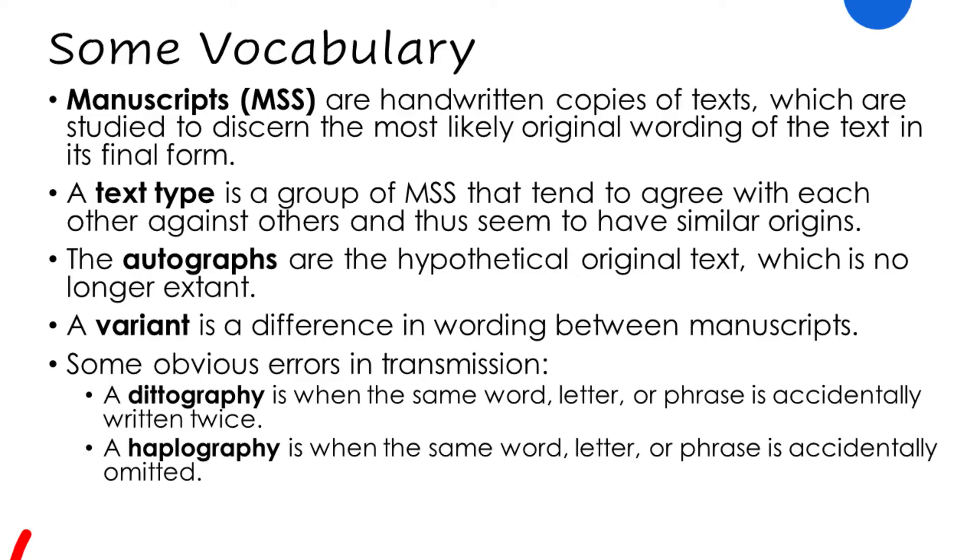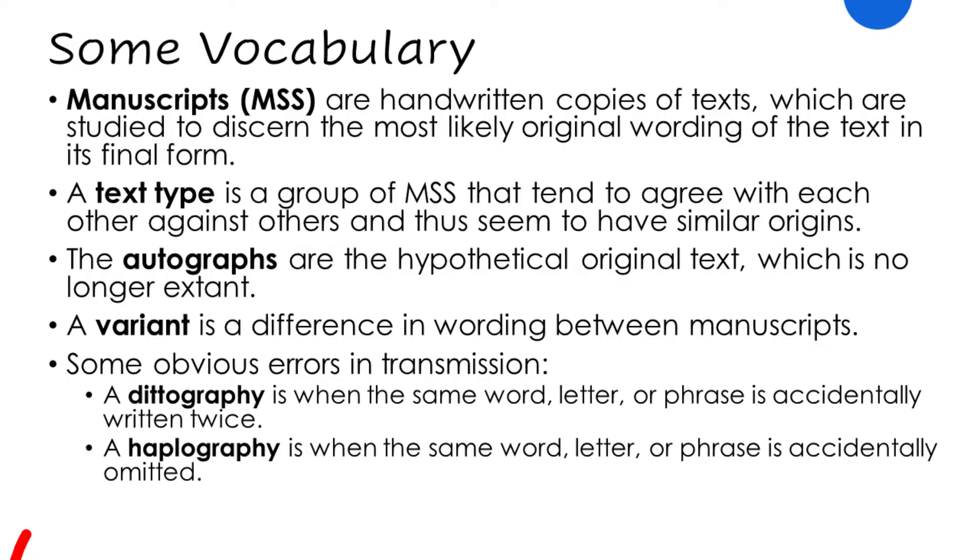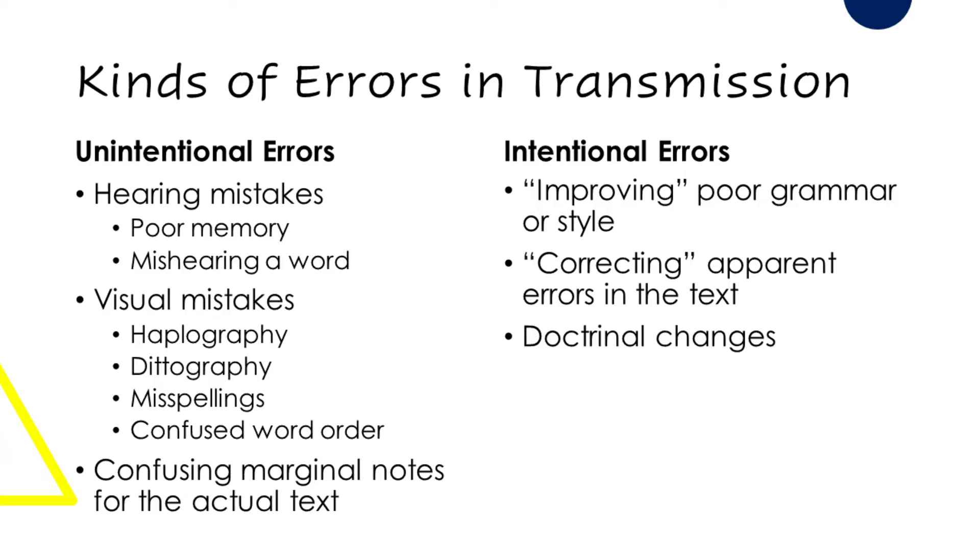We also have vocabulary describing common errors that occur in transmission — that is, why do variants arise over time? Sometimes, if you've ever had to copy something by hand, you write the same thing twice without realizing it; that's known as a dittography. The opposite — accidentally leaving a word out — is known as a haplography. We can distinguish between two basic kinds of errors: unintentional errors and intentional errors.